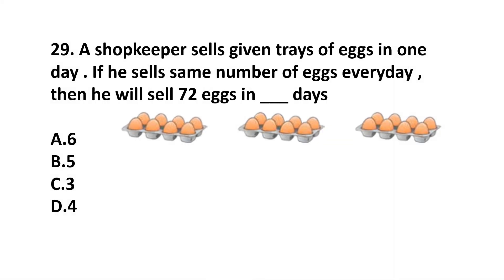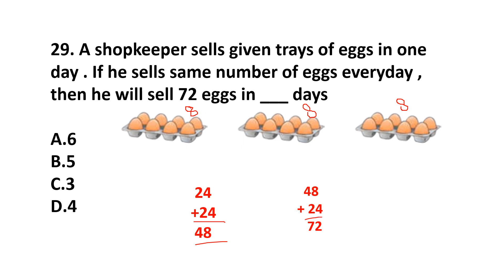Question number 29. A shopkeeper sells given trays of eggs in one day. If he sells the same number every day, he will sell 72 eggs in how many days? In one day he sells 3 trays with 8 eggs each, so 24 eggs per day. In two days he sells 24 plus 24 = 48 eggs. On the third day he sells 48 plus 24 = 72 eggs. So he will sell 72 eggs in 3 days. The answer is option C.